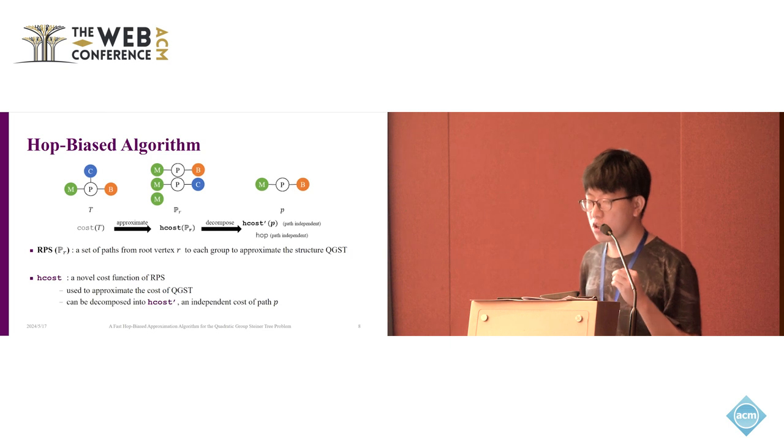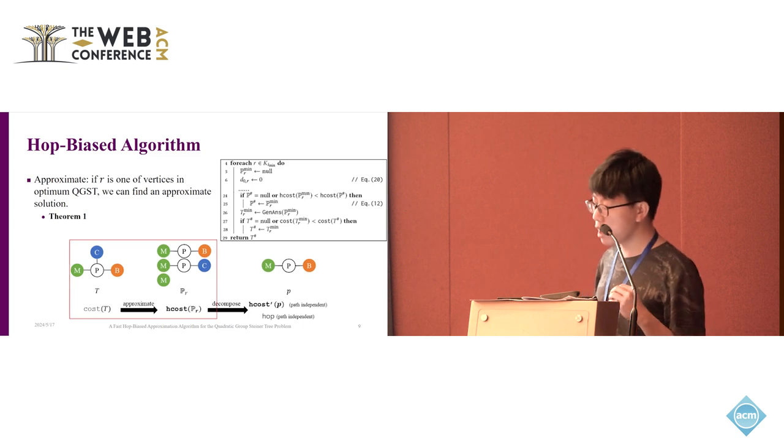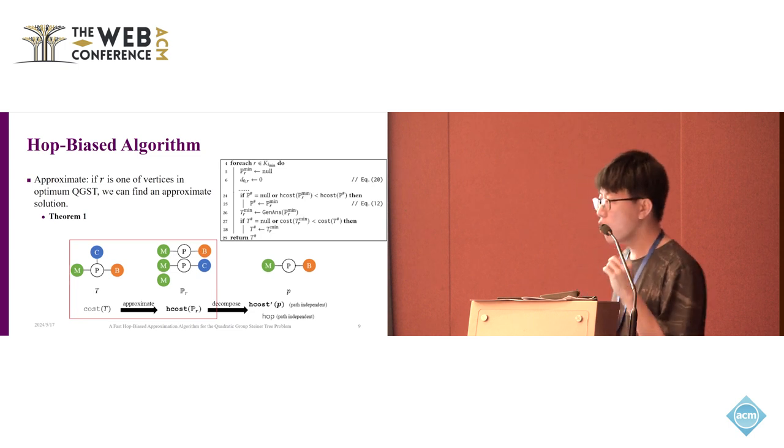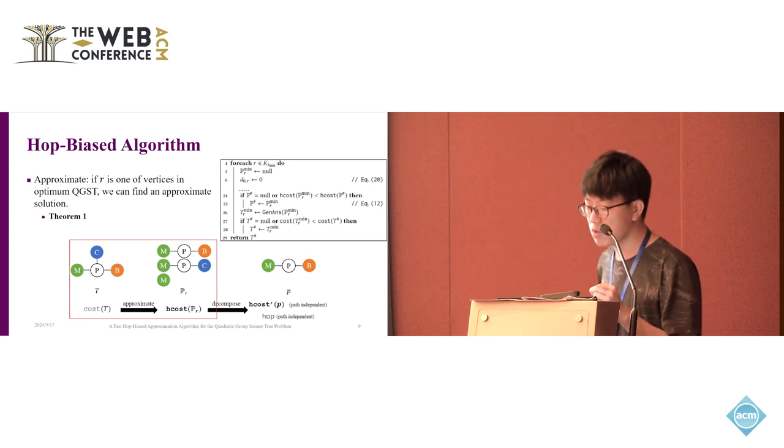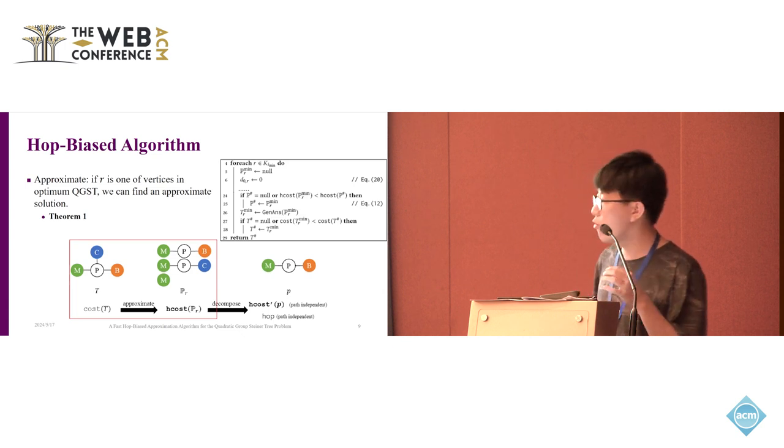We will see later that the H-cost can be decomposed into the H-cost pi, which is an independent path cost. So by now, the QGSTP is reduced to the path search, which leads to the reduction of the time complexity. Not digitally, our algorithm shows that if the root vertex r is one of the vertices in the optimal QGST, we can search the min-cost RPS rooting at r, and use this RPS, we can find a solution with an approximation ratio guarantee. So the first step of our algorithm is to enumerate the smallest group.